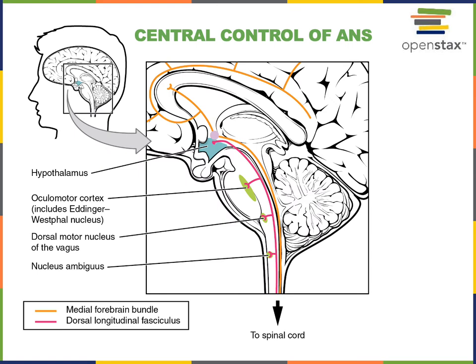The autonomic efferent pathways of the peripheral nervous system are regulated by regions within the brain. The hypothalamus, a region of the diencephalon, receives sensory information and processing relayed from structures of the limbic system, then sends commands through the autonomic and endocrine systems. For example, if you're scared or angry, that emotional processing by the limbic system will stimulate nuclei in the hypothalamus that activate the sympathetic division of the autonomic nervous system to help the body respond to stress.